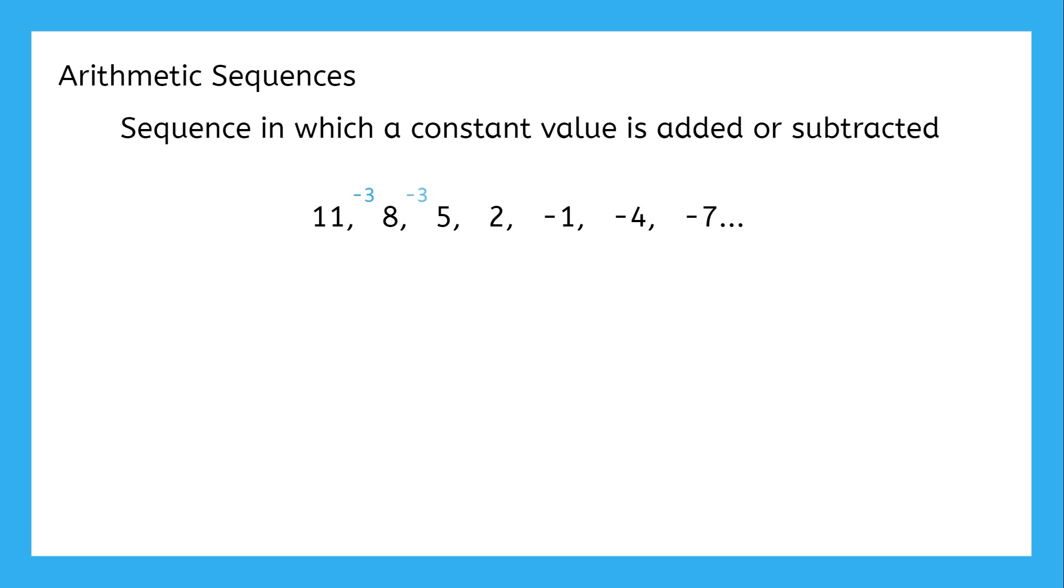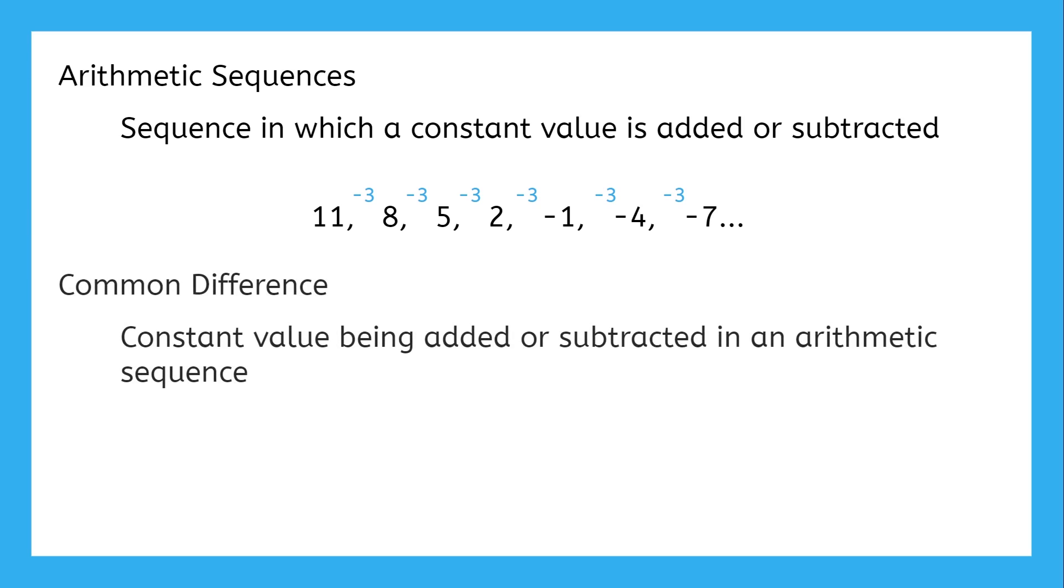Same thing between 8 and 5, and between 5 and 2, and between every pair of consecutive numbers after that. This value that describes the pattern of an arithmetic sequence is called the common difference.